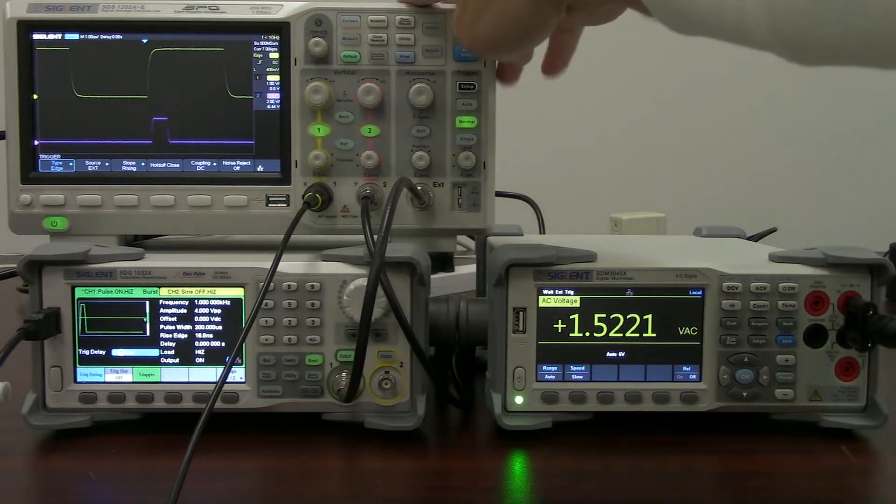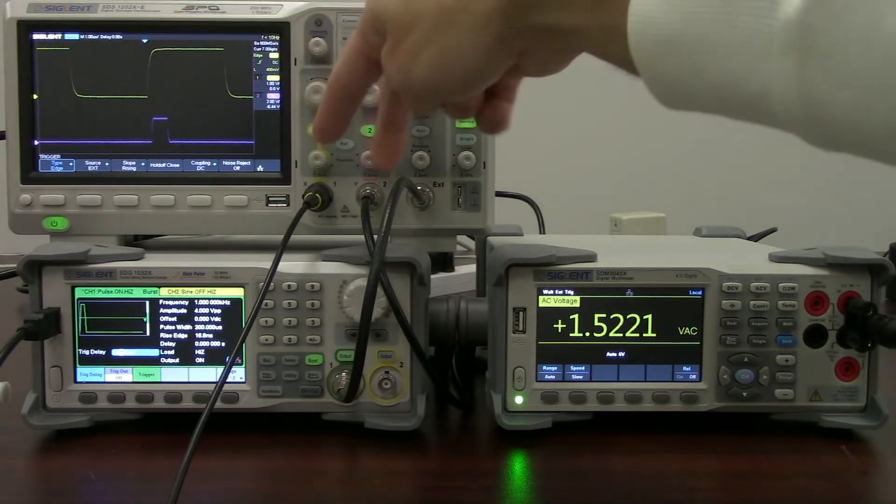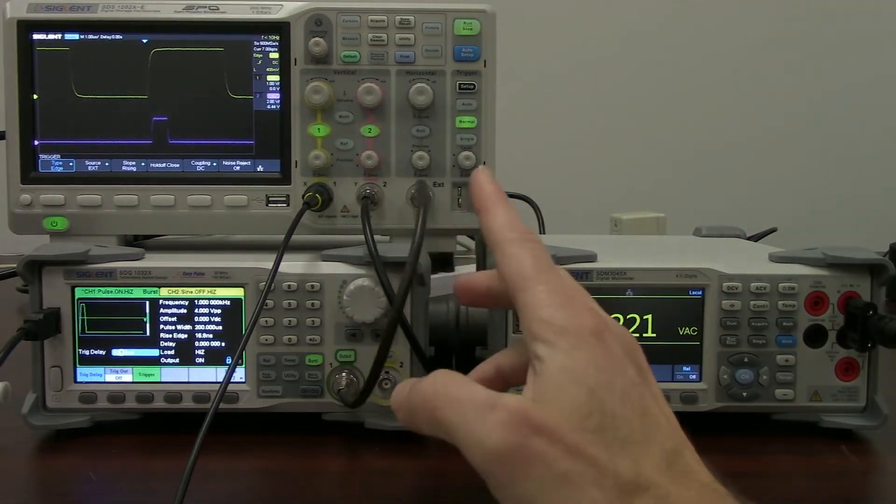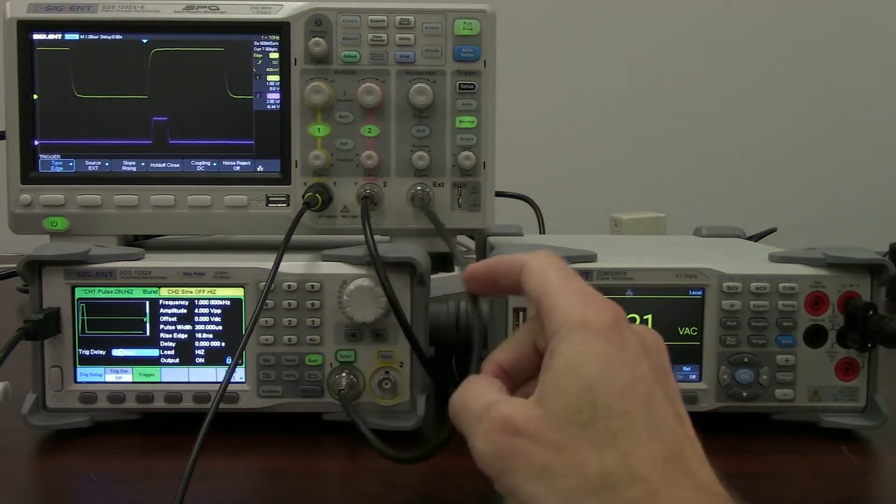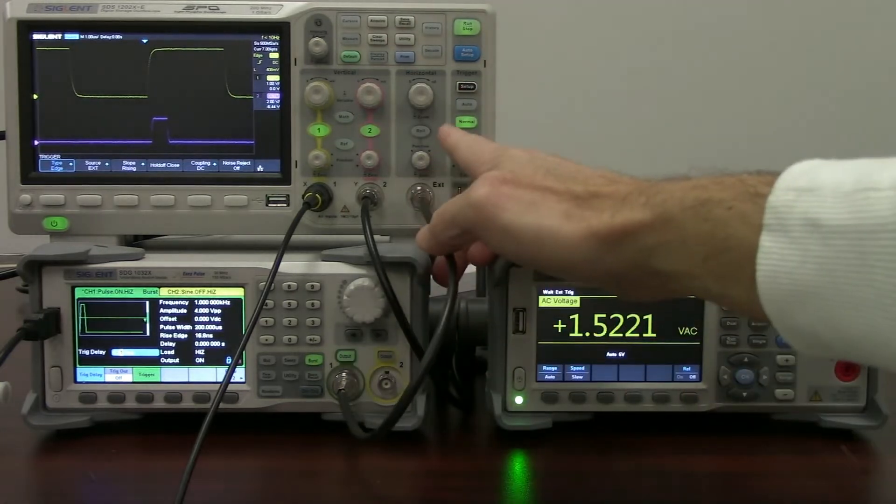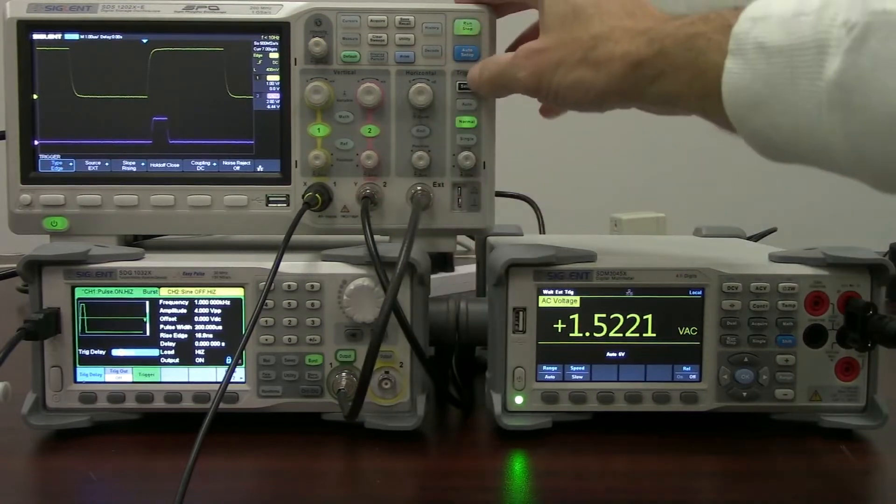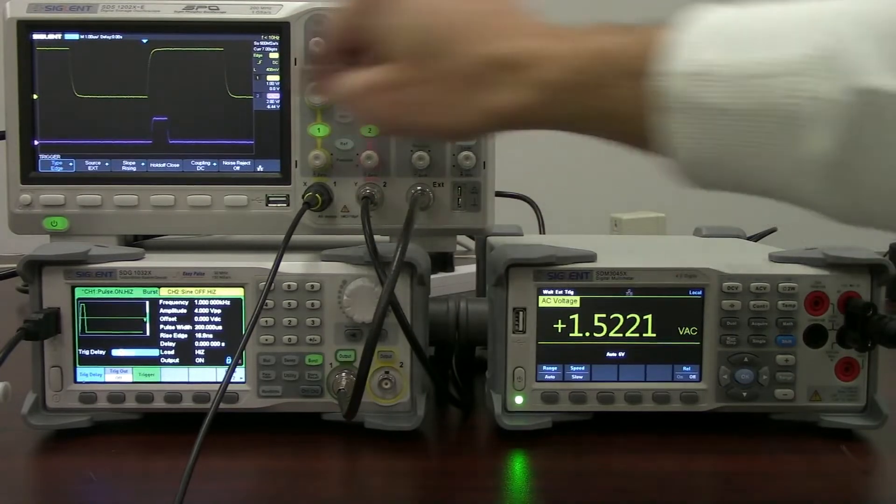In this particular example, I'm going to use the Siglent SDS-1202X-E oscilloscope. That is a two-channel oscilloscope with an external trigger input. That external trigger input is going to help us because it can be configured to work just like any of the other channels on the oscilloscope through the trigger model.